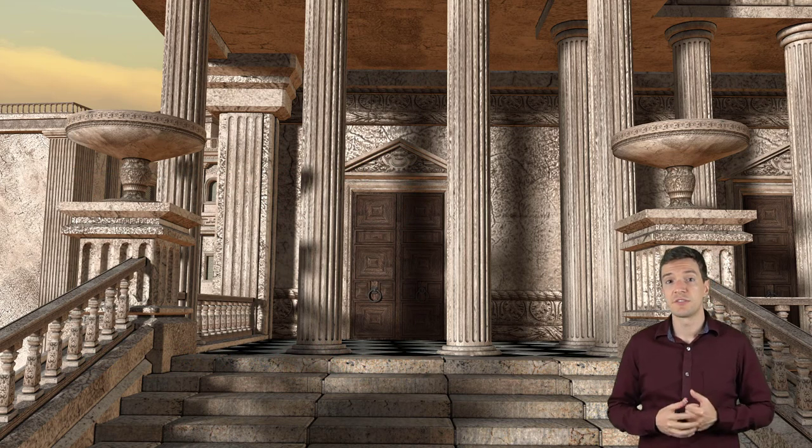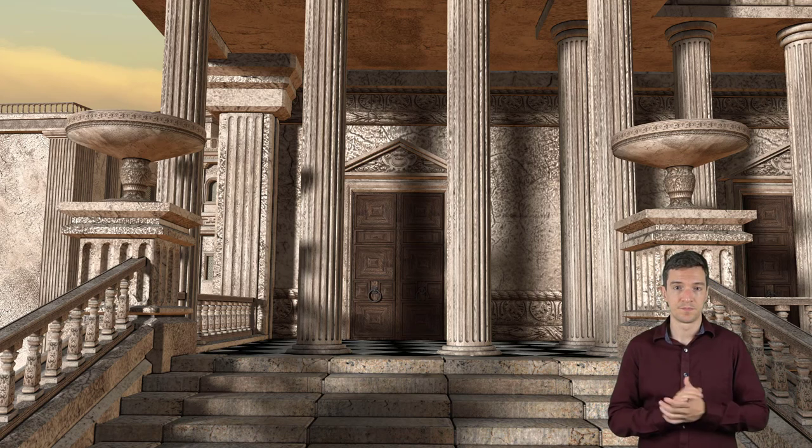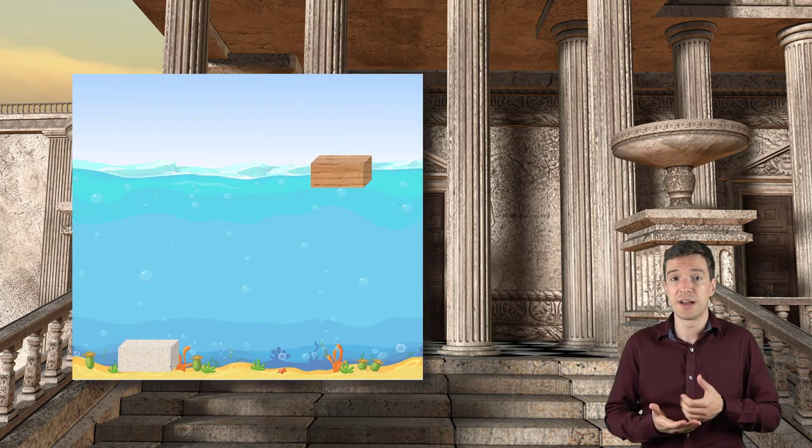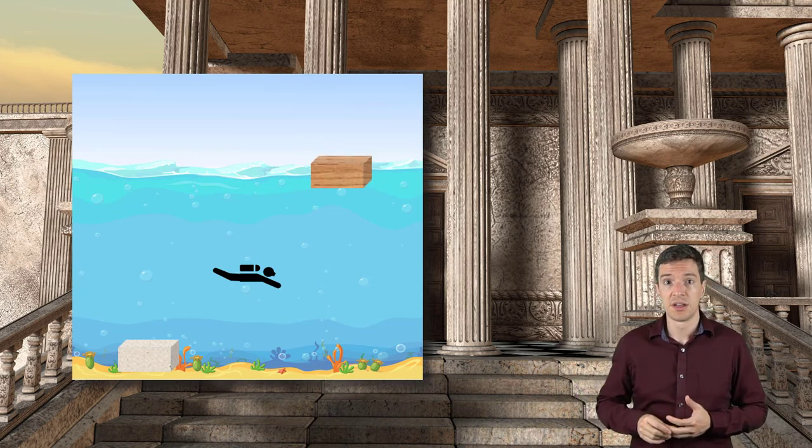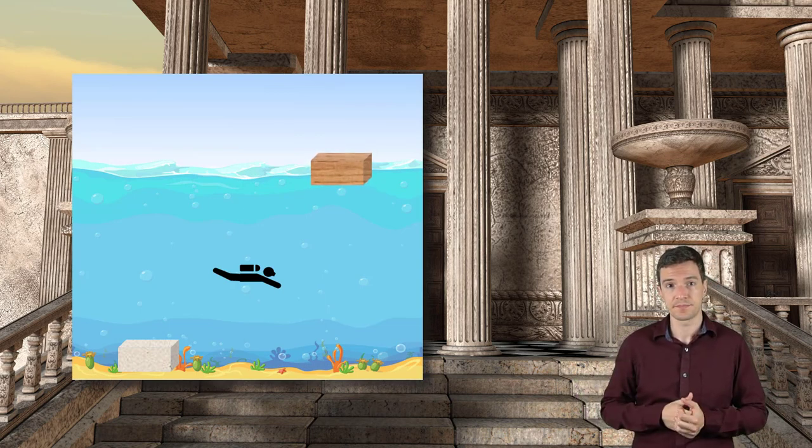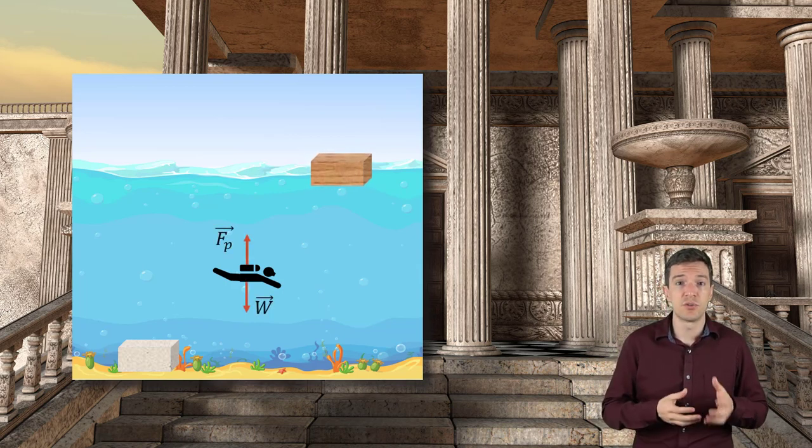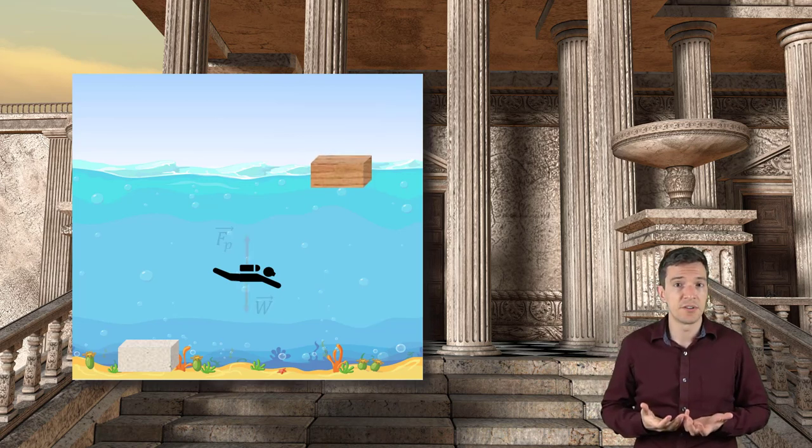We can also define a different kind of buoyancy, called neutral buoyancy. This is typically used by scuba divers in order to be able to maintain the same position if they are not moving. Neutral buoyancy is achieved when the force generated by the fluid pressure is equal to the weight of the scuba diver.